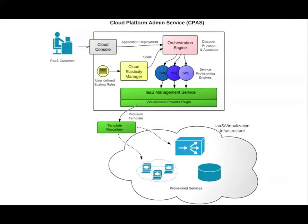We want somebody to do a lot of this stuff for us — give us a console, we can put a war up and have it deployed to the cloud, or use a Maven build and just push it out. Under the covers we have elasticity configured so that if we need more servers they expand, more servers provisioned or load balanced. And all the IaaS stuff is hidden away.